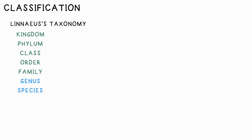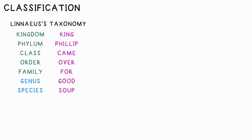Carl Linnaeus classified organisms into kingdom, phylum, class, order, family, genus, and species. A good mnemonic for this is: King Philip came over for good soup.